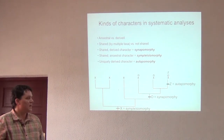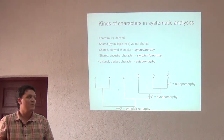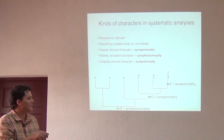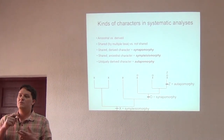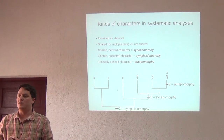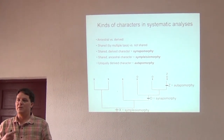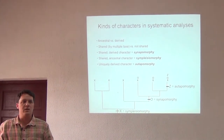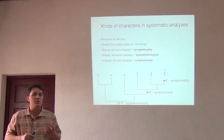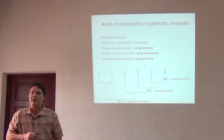The other kind of character is autapomorphy — that Z that only appears in this one taxon. That's a uniquely derived character. It's derived, it's something that has been an evolutionary advancement, but it's not shared. It's unique and only present in one taxon.